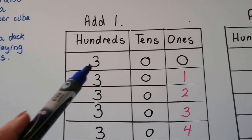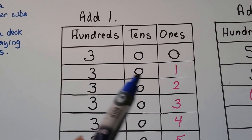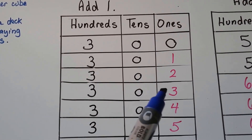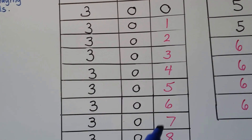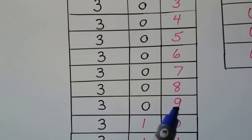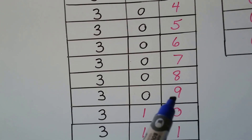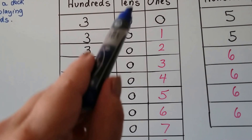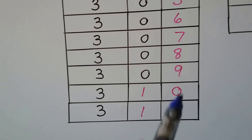In this table, we're adding one. We start with three hundred, zero tens, and zero ones. Adding one gives three hundred, zero tens, one one. Then two ones, three ones, four ones, five ones — the hundreds and tens stay the same. Six, seven, eight ones — still staying the same. When we get to nine ones, we can't put two digits in one column, so we regroup and put a one in the tens column, giving zero ones.